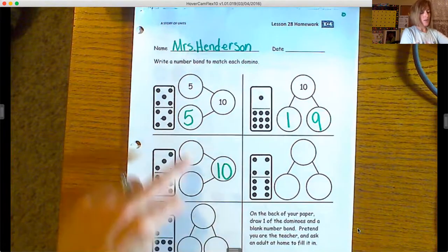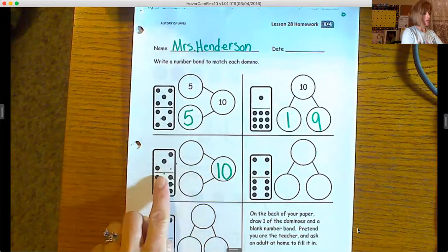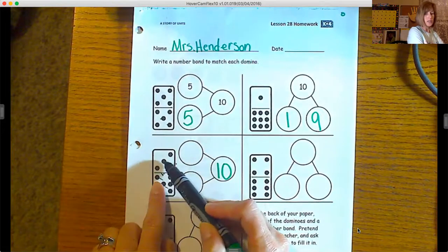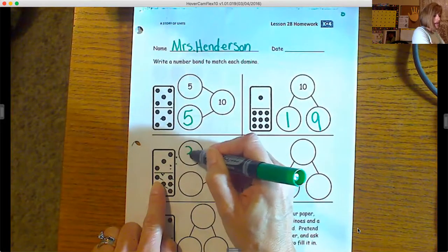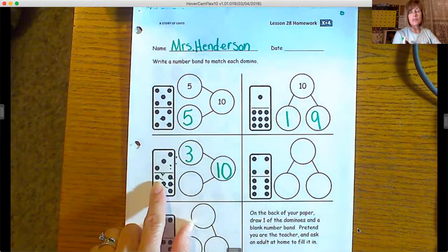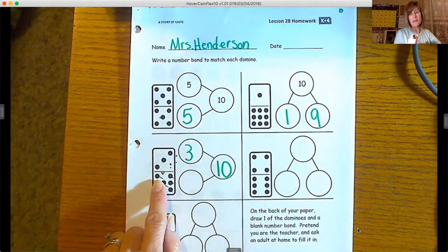Now we're going to figure out the two parts that make that whole number. So up here we have one, two, three, so we'll write our three here. Make sure you're writing your numbers the correct way. I know a lot of times we still write them backwards, so really try to pay attention.